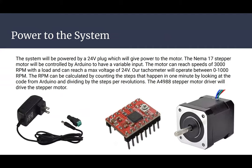As for the power to the system, the system will be powered by a 24 volt plug which will give power to our motor. The motor will be a NEMA 17 stepper motor which will be controlled by an Arduino to have a variable input. Our motor will be able to reach speeds of 3000 RPM with the load and can reach a maximum voltage of 24 volts. Our tachometer will be operating between 0 and 1000 RPM and since we do have a variable input, we'll be able to hand calculate our RPM by counting the steps that occur in a minute by looking at our code from the Arduino and dividing by the steps per revolution. The A4988 stepper motor driver will drive our stepper motor.